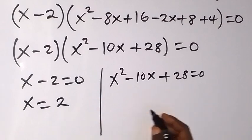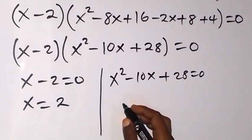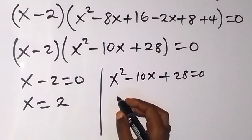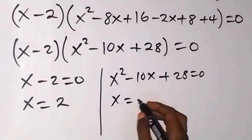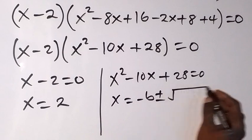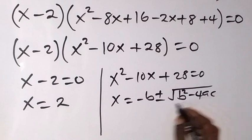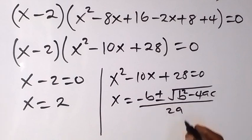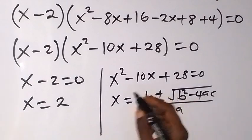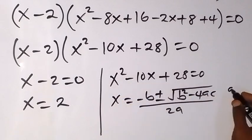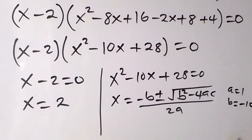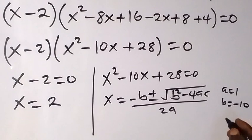Now let's solve for x in the quadratic equation x squared minus 10x plus 28 equals zero, using the quadratic formula: x equals minus b plus or minus square root of b squared minus 4ac, all over 2a. Here, a equals 1, b equals minus 10, and c equals 28.